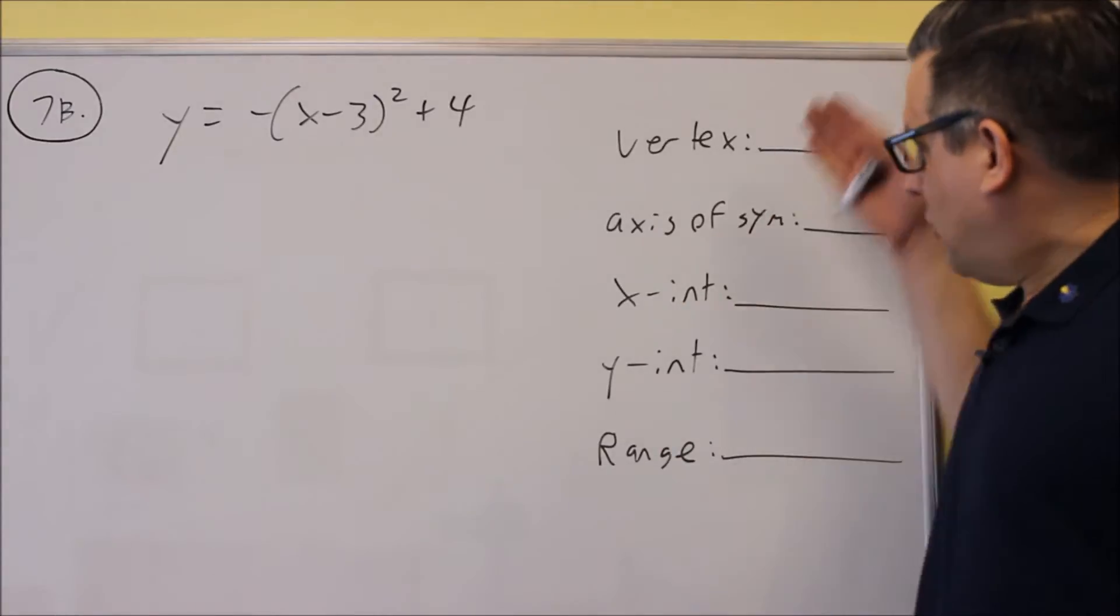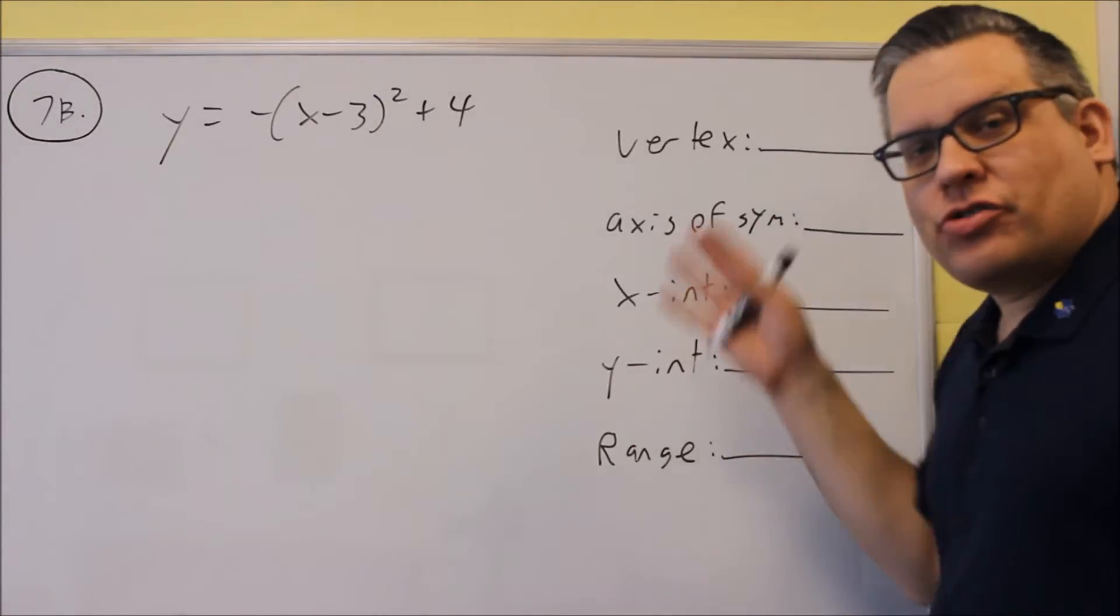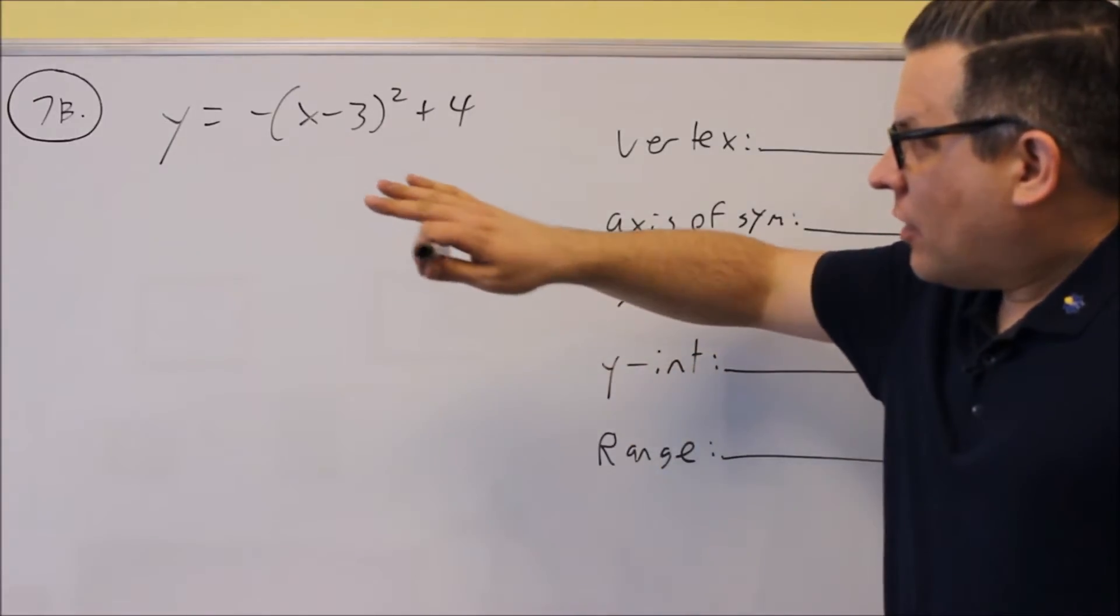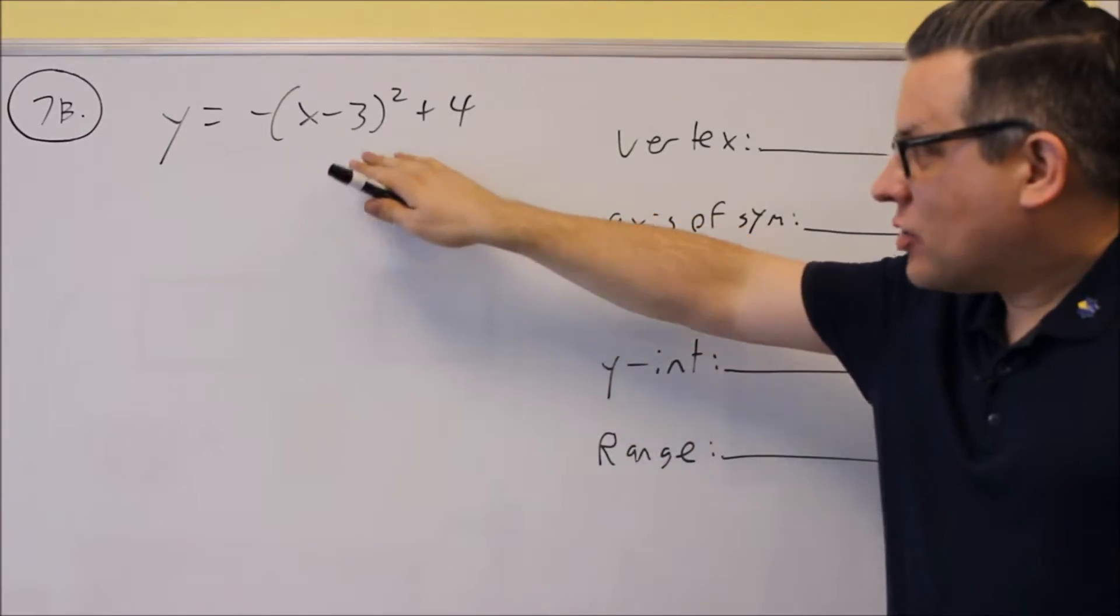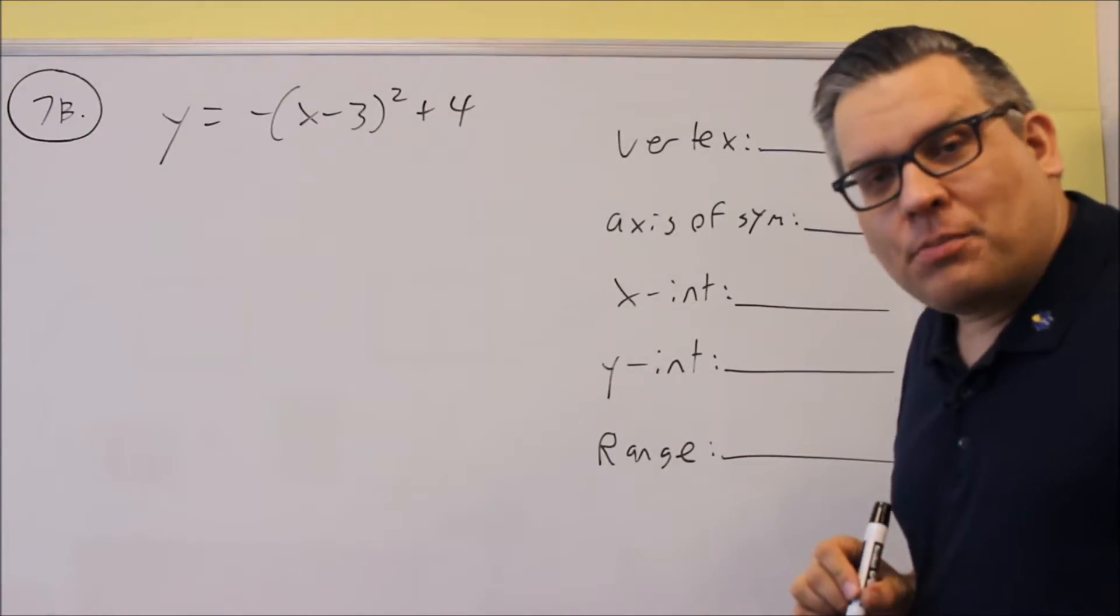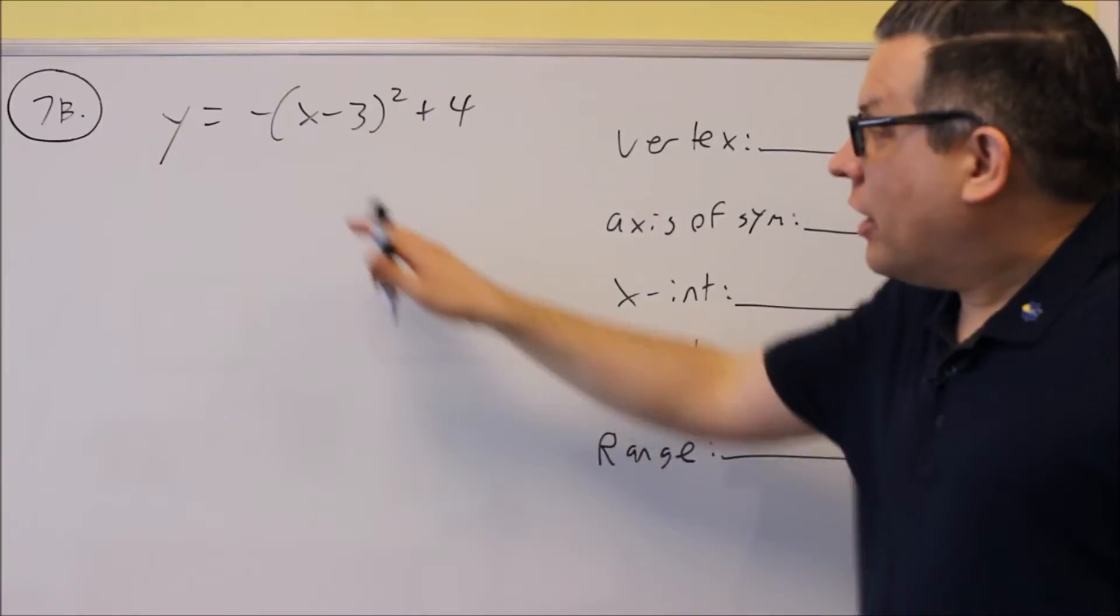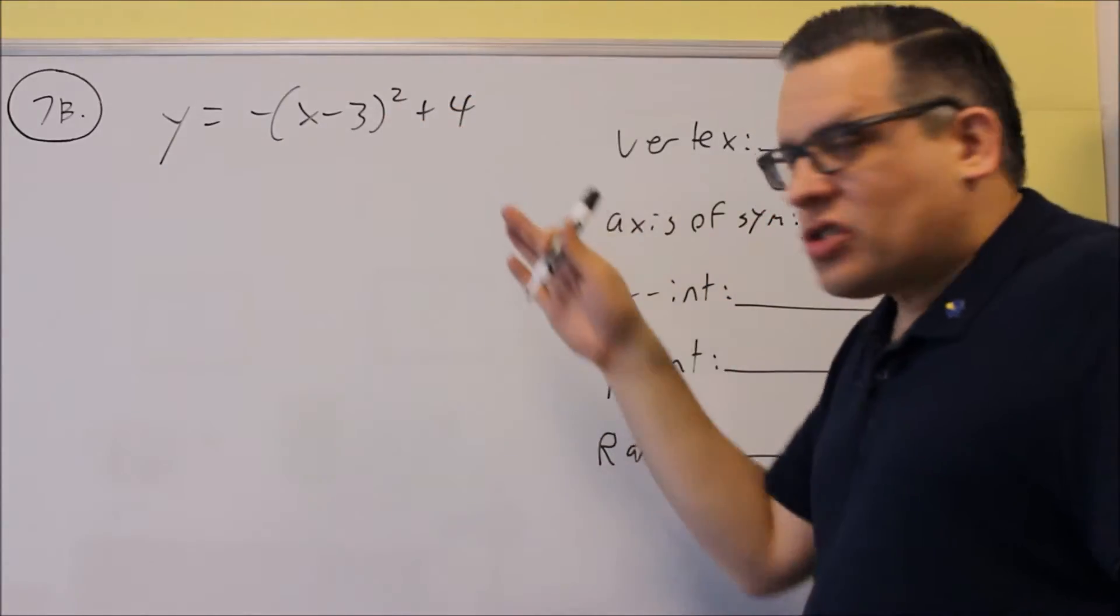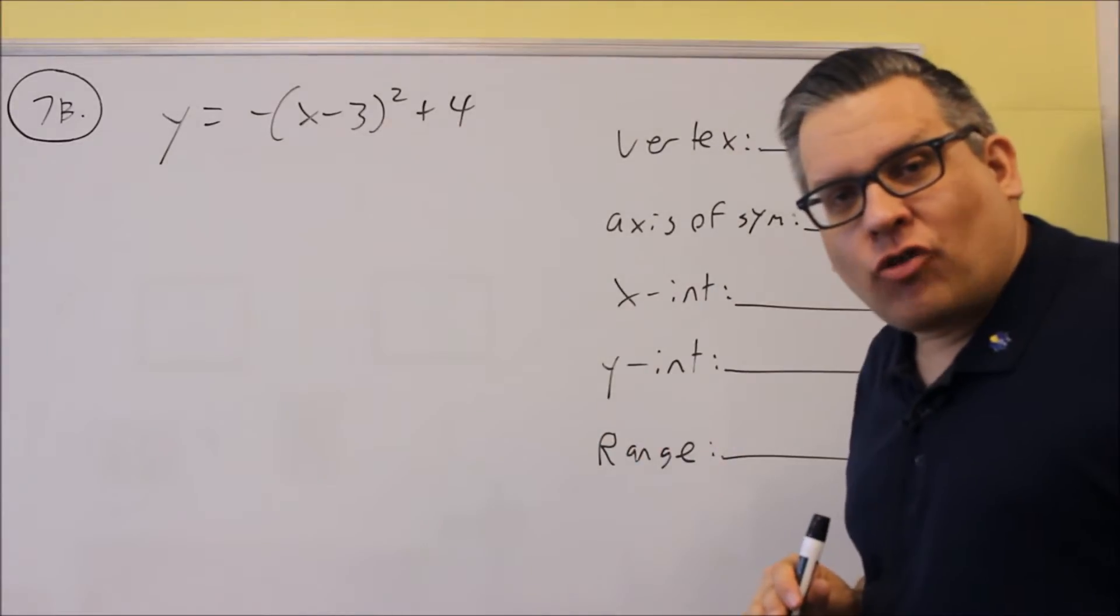Okay, for 7b, we're asked to find this information and graph again like the previous one for 7a. Now, for this one here, it's written in a different form than the way we had it before.